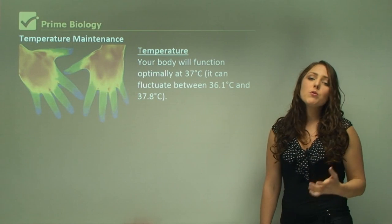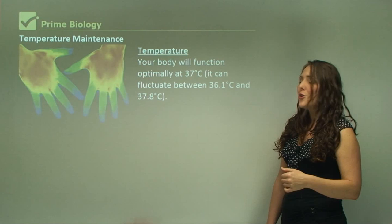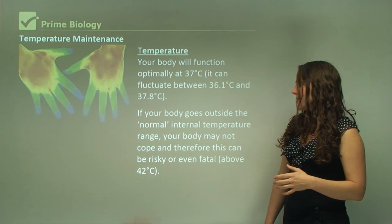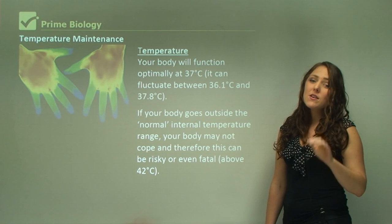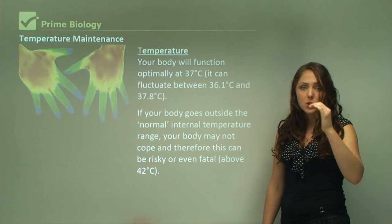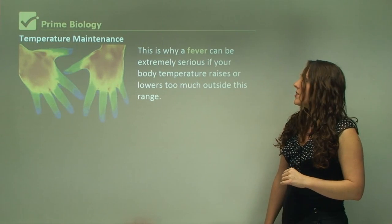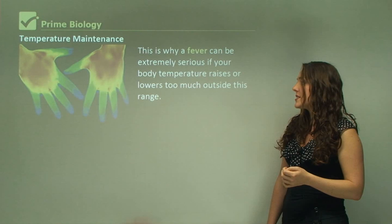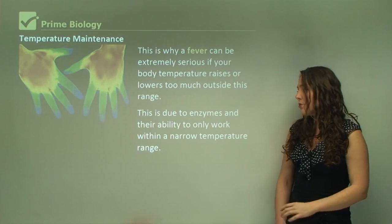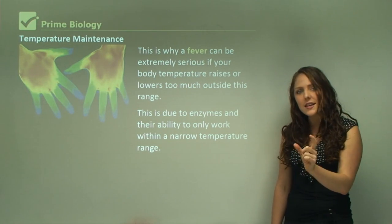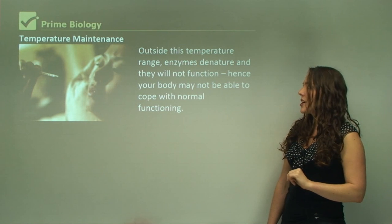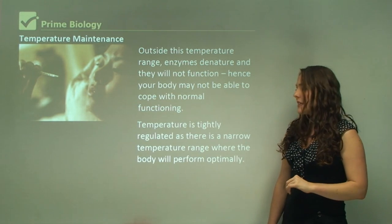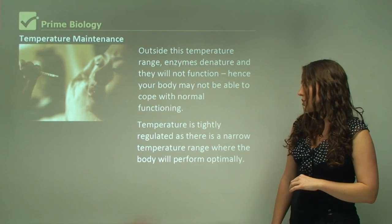Your body functions optimally at around 37 degrees, fluctuating between 36.1 and 37.8 degrees. Outside that range, the body may not cope, and this can be risky or even fatal. Above 42 degrees can be fatal, and below 35 degrees is detrimental. A fever is extremely serious if body temperature goes too far outside this range. This is because enzymes can only work within a very narrow temperature range — outside it, enzymes denature and the body cannot maintain normal functioning.